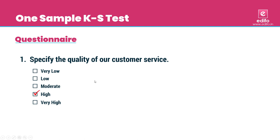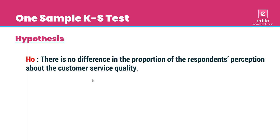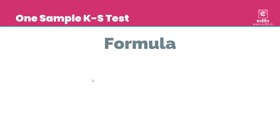Now, we need to specify our hypothesis for testing. The null hypothesis states: there is no difference in the proportion of respondents' perception about the customer service quality. The alternative hypothesis states: there is a difference in the proportion of respondents' perception about the customer service quality — meaning the theoretical distribution and actual distributions are different.